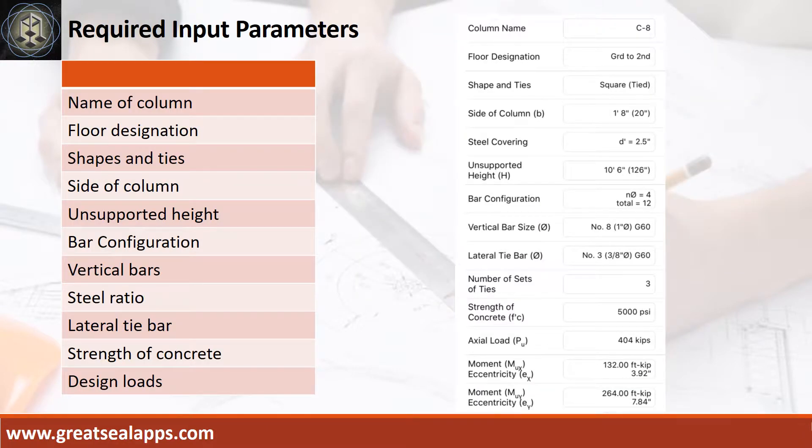Enumerate input parameters required: column name C8, floor designation ground to second, square shape tied column, side of column 20 inches, steel covering 2.5 inches, unsupported height 10 feet 6 inches, bar configuration 4 bars per face, vertical bars 1 inch diameter at grade 60, lateral tie bars 3/8 inch diameter at grade 60, strength of concrete 5,000 PSI.